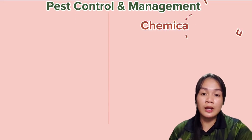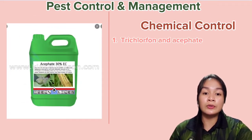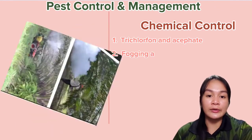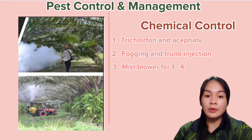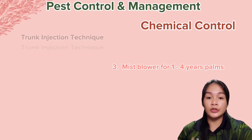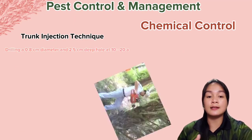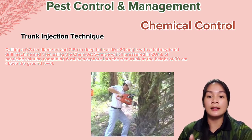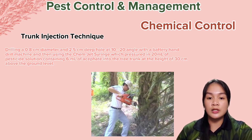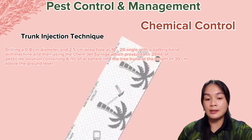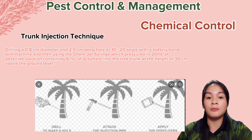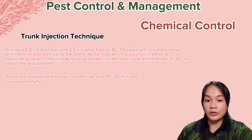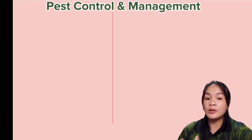To eliminate or prevent this pest, chemical control can be applied. Trichlorfon and Azodrin are used to control leaf miners, defoliators, and bagworms. Other than fogging, tree trunk injection is usually done for oil palm that is 12 years old and above, while mist blower can be applied for one to four year old palms. The trunk injection technique involves drilling a 0.8 cm diameter and 2.5 cm deep hole at a 10 to 20 degree angle using a battery-operated hand drill, then using a Gemjet syringe to inject 20 mL of pesticide solution containing 6 mL of monocrotophos into the tree trunk at a height of 30 cm above ground level. The solution is then screwed in and left 15 to 20 minutes to completely force the solution into the tree.